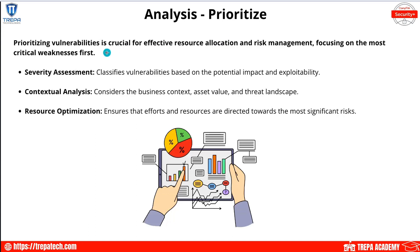Prioritizing vulnerabilities is crucial for effective resource allocation and risk management — focus on the most critical weaknesses first. Let's say we do a scan and notice three vulnerabilities: one is level 10 but it's on an end user who works two days a week in the office, but then we have a level six vulnerability on a critical e-commerce server. If that gets data breached, we're going to have a big GDPR fine.